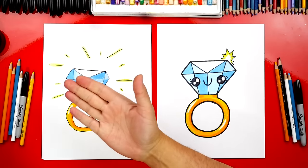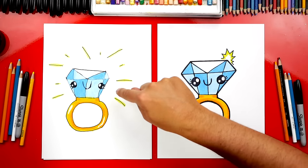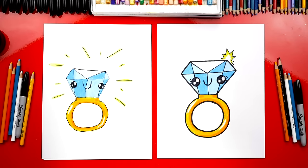Give me five. You did awesome on coloring your diamond ring. I especially love those extra little sparkle lines. Makes them look really shiny. And I added a little sparkle on mine too.